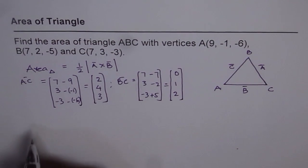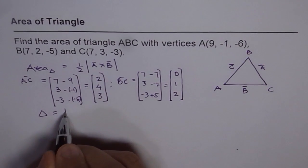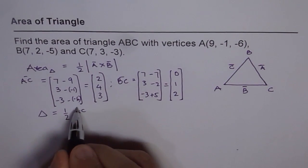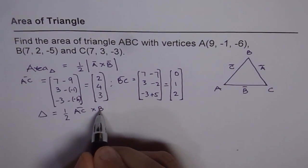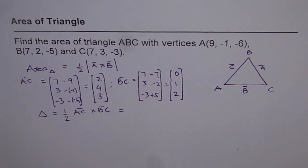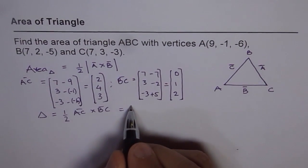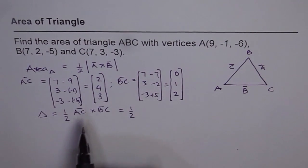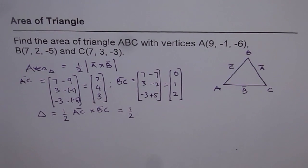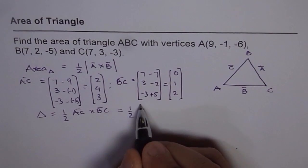Now area of the triangle is equal to half times cross product of AC cross BC. And after doing the cross product, we will actually take the magnitude. So the cross product is half of, AC is -2, 4, 3, and BC is 0, 1, 2. So we can use the matrix method or our rows method. Let's use the matrix method.